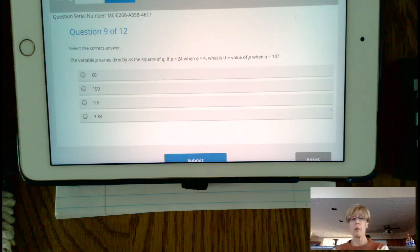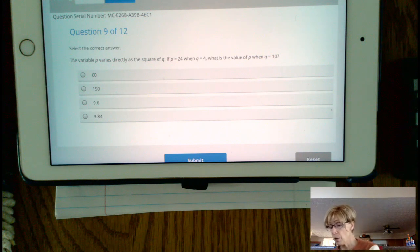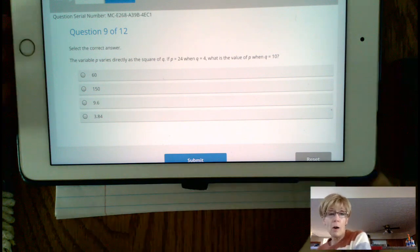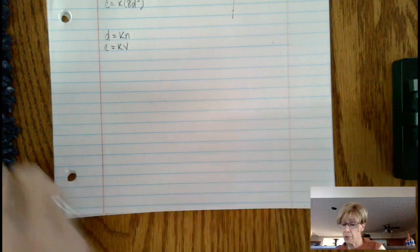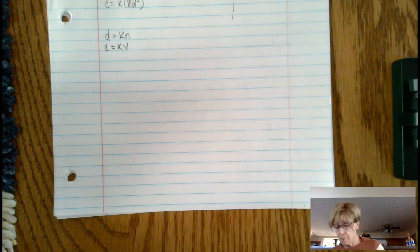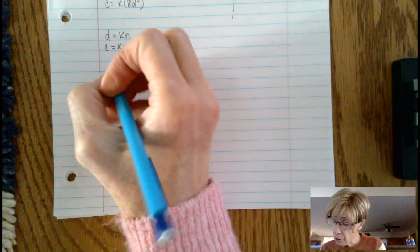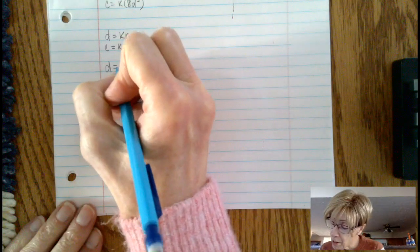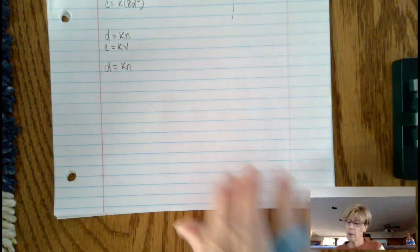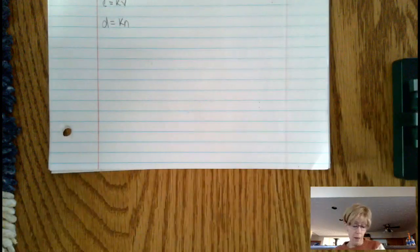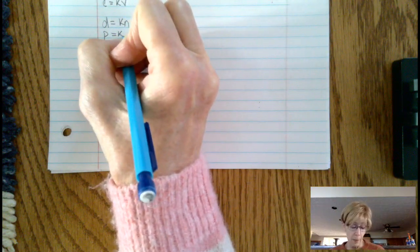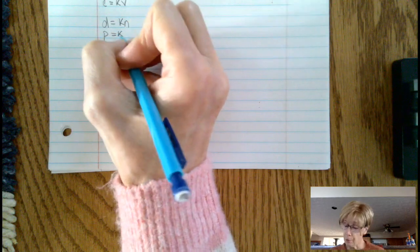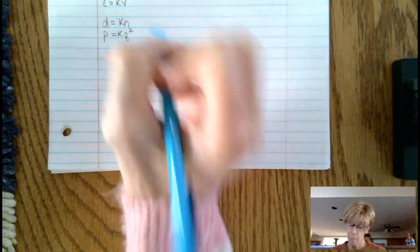So let's start here by writing out our problem, watching out for whether the question varies inversely. I'm going to start by writing d equals kn. Then the variable p varies directly as the square of q is our immediate setup.